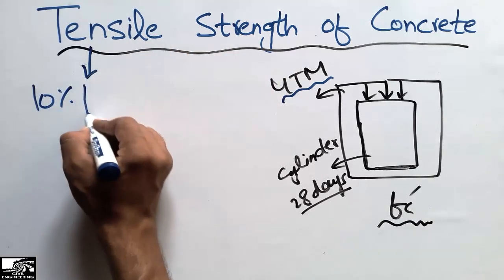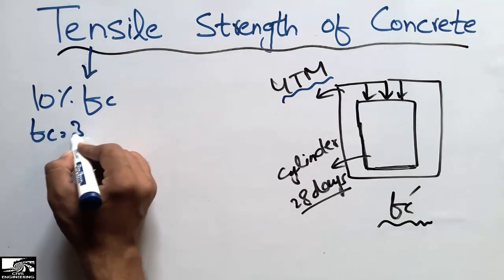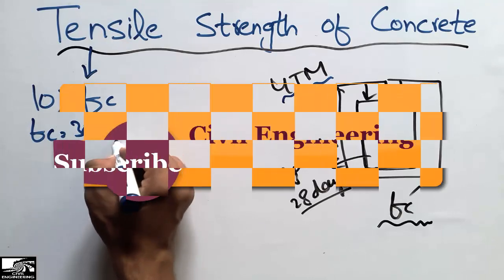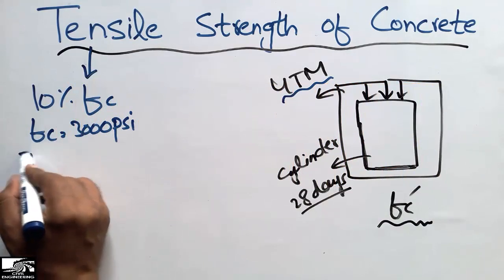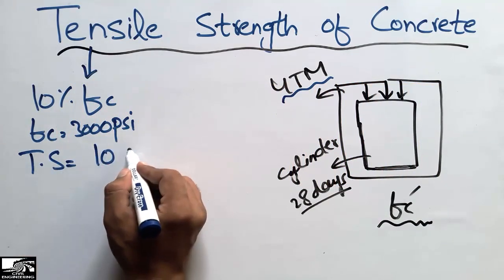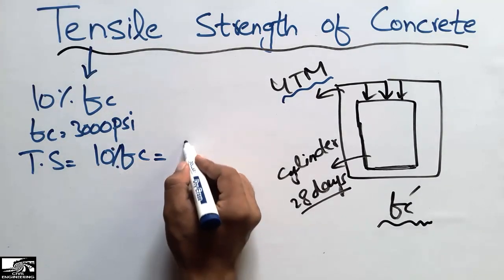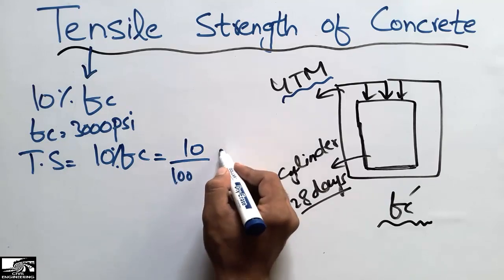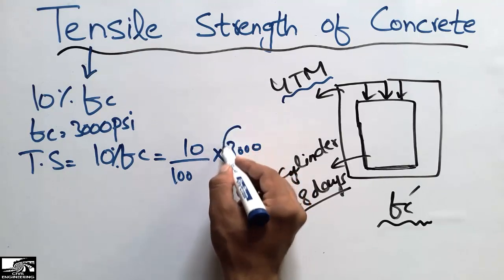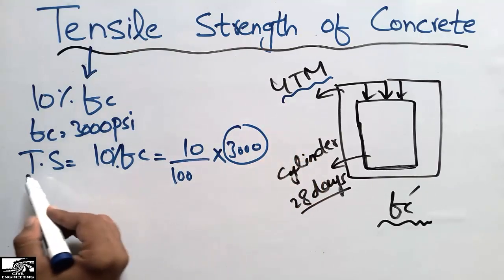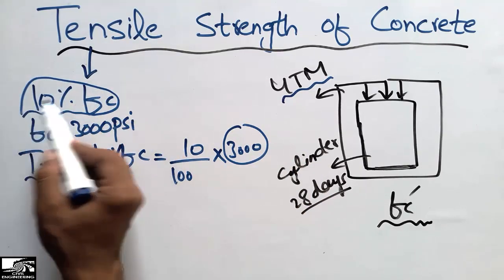It means that if my compressive strength is 3,000 psi (pounds per square inch), the tensile strength can be found as 10 percent of the compressive strength. That is (10 / 100) × 3,000. Usually the tensile strength is approximately 10 percent, with some plus or minus variation.